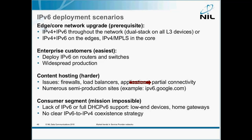So you might be on IPv6, your customer might be on IPv6, but somewhere in the middle the whole thing is broken. And that's why, for example, Google doesn't offer IPv4 and IPv6 by default.